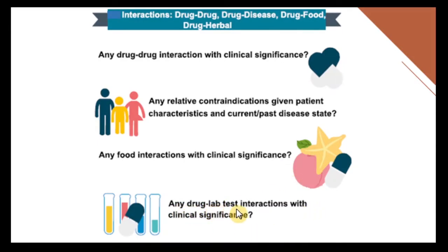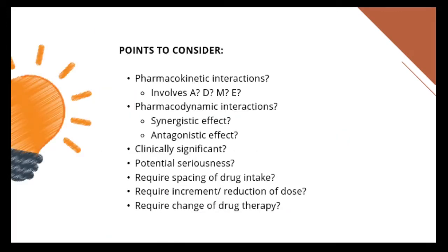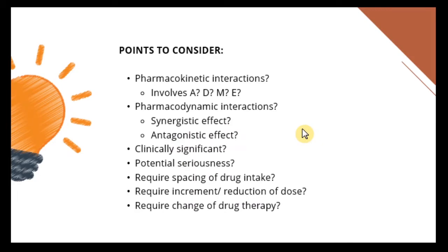Is the drug causing any interference with laboratory parameters? Points to consider include the type of drug interaction itself — is it pharmacokinetic, involving absorption, distribution, metabolism, or elimination? Or is it pharmacodynamically related, which might be causing a synergistic effect of two medications, or an antagonistic effect in which two drugs are antagonizing each other in terms of mechanism of action or response?